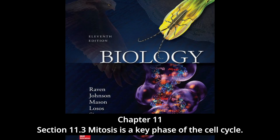Mitosis is discussed as it occurs in animals and plants, where the process does not vary much; it is somewhat different among fungi and some protists. Although mitosis is a continuous process, it is traditionally subdivided into four stages: prophase, metaphase, anaphase, and telophase. C is the phase of the cell cycle when the cytoplasm divides, creating two daughter cells — called cytokinesis. In animal cells, a contracting ring of actin constricts like a drawstring to pinch the cell in two; in cells with a cell wall such as plant cells, a plate forms between the dividing cells.